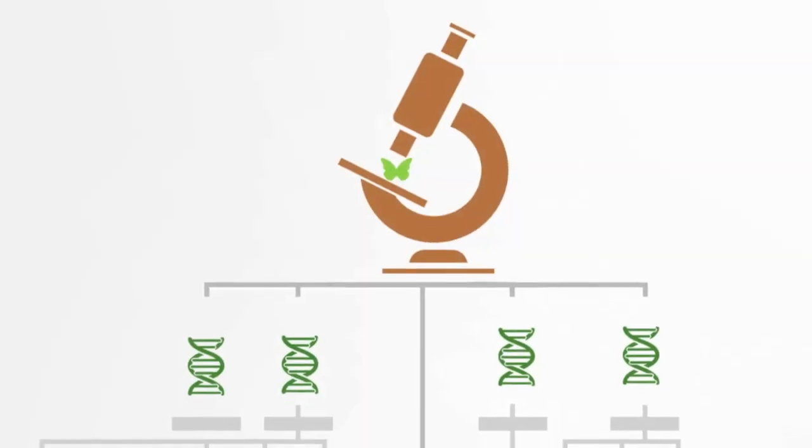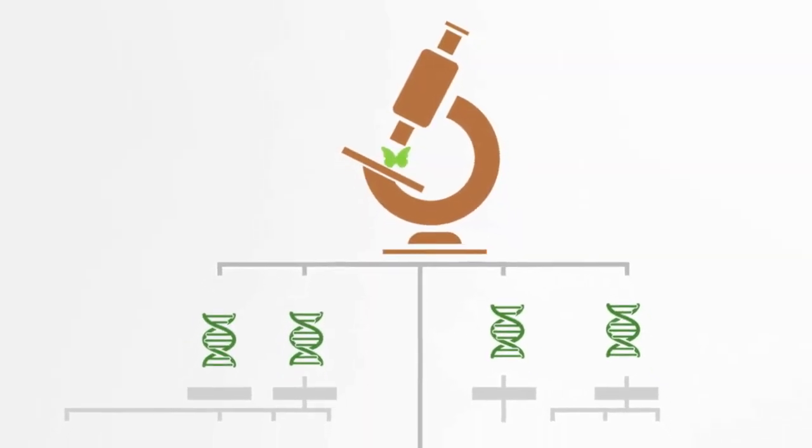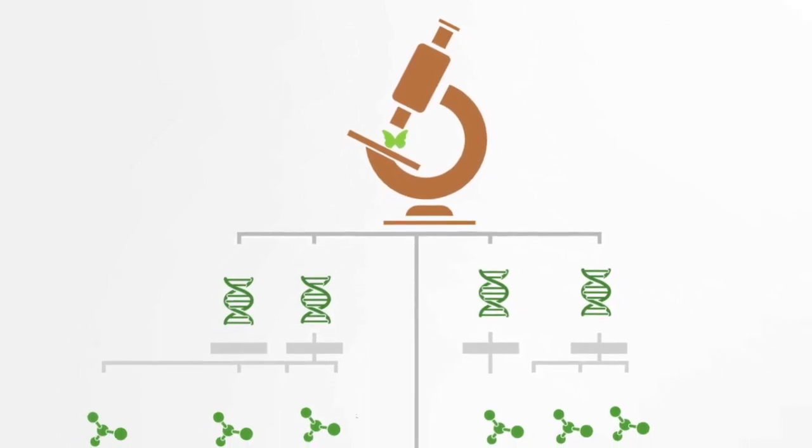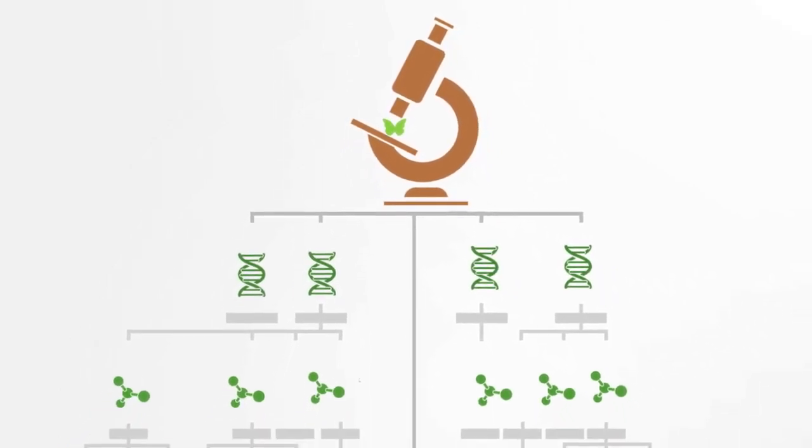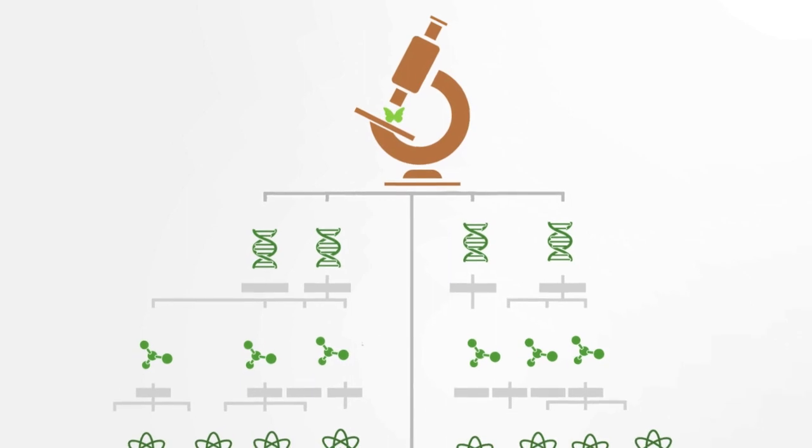This approach to describing things is called analysis or reductionism. Reductionism is the traditional approach taken within modern science that tries to describe complex phenomena in terms of their individual parts.